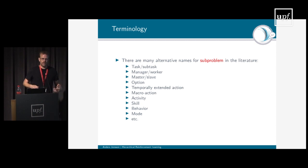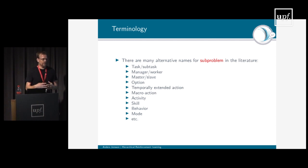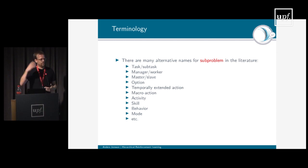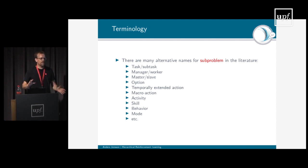Before I finish this part, I want to note that there has been no strong common terminology even among researchers. There's a huge number of names used for this idea of a sub-problem: task, sub-task, manager, worker in feudal reinforcement learning; sometimes master and slave for manager and sub-manager; option, temporally extended actions, macro action, activity, skill, behavior, mode. All of these essentially mean the same thing — they represent sub-tasks that the agent can perform as part of achieving its overall task.